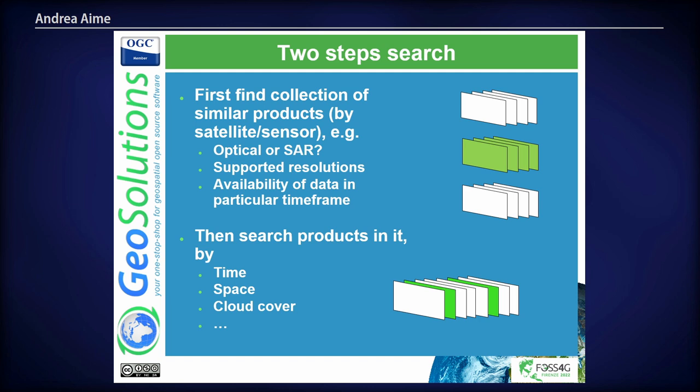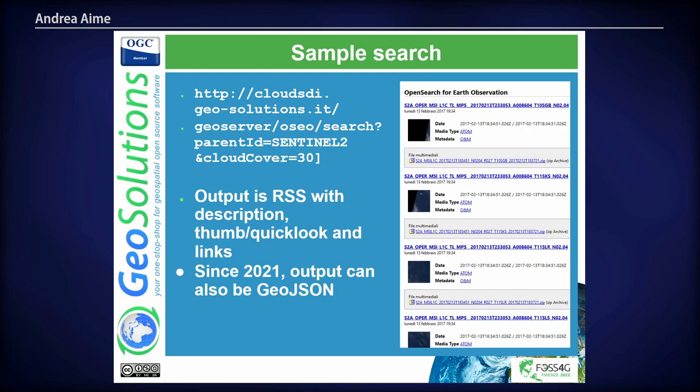The first search is to locate the collections that you are interested in. For example, you say: this area, this time range — which collections cover this area? You get a list of collections, decide which ones you're interested in, and then drill down into the collections looking for the product. Say I want: this area, this time, less than 10% cloud cover. OpenSearch is a protocol based on GET requests, and that URL tells me: locate all the Sentinel true-color images with less than 30% cloud coverage. I have access to a bunch of other attributes to do my search.